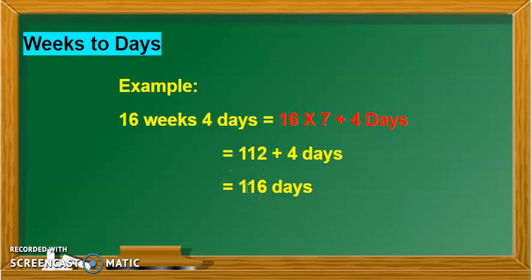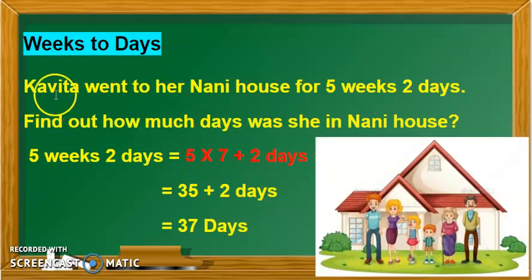The total answer is one hundred and sixteen days equals sixteen weeks and four days. Let us see one more math story.